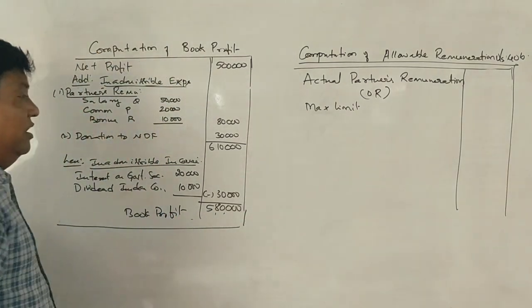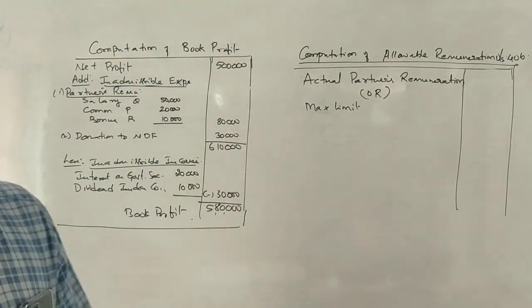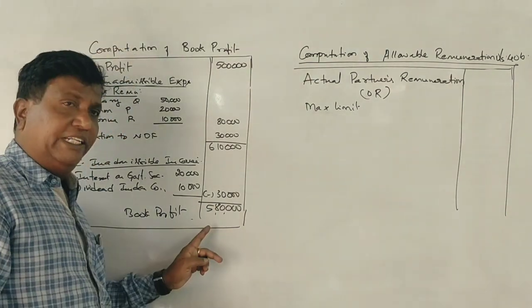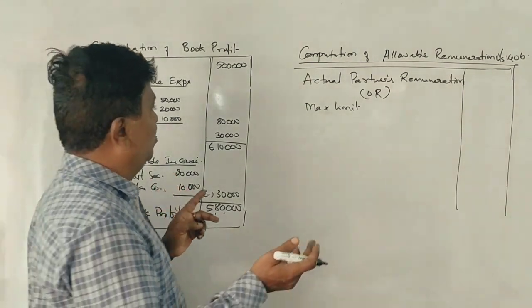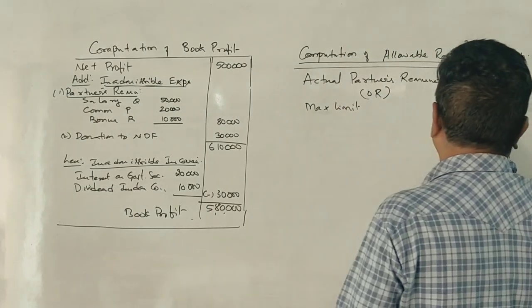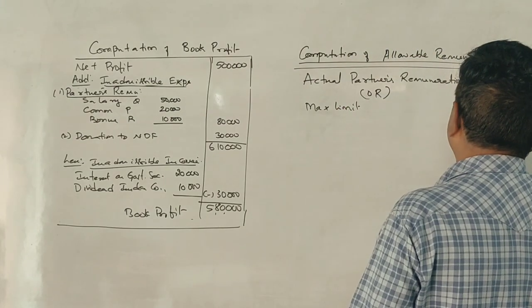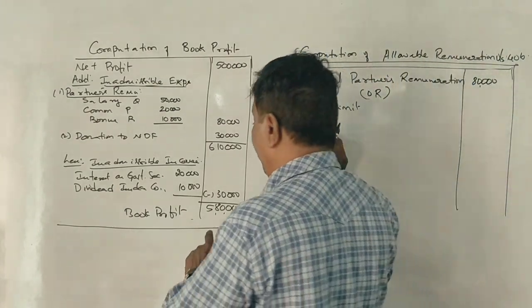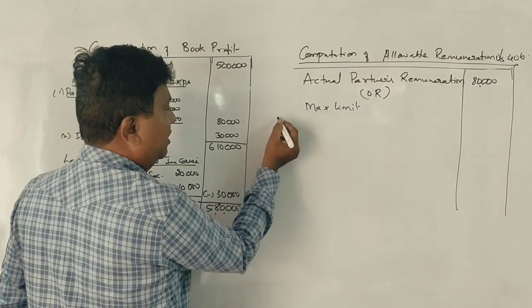This is the allowable remuneration. First, book profit is more than 3 lakhs. Actual remuneration is 80,000. Book profit is more than 3 lakhs.